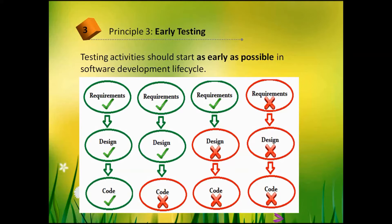Also, finding defects before versus after release matters significantly. If a defect is found after release, it will cost the company more money to fix. For example, a critical issue in a banking application: when a user submits a money transfer from account A to account B, the balance of account A decreases but account B doesn't increase. This critical defect can cause payment delays, contract breaches, penalties, and reputation damage, resulting in enormous losses.